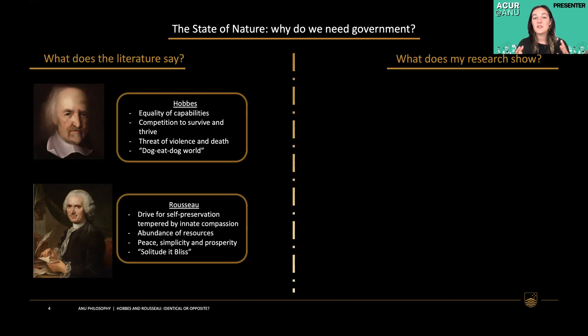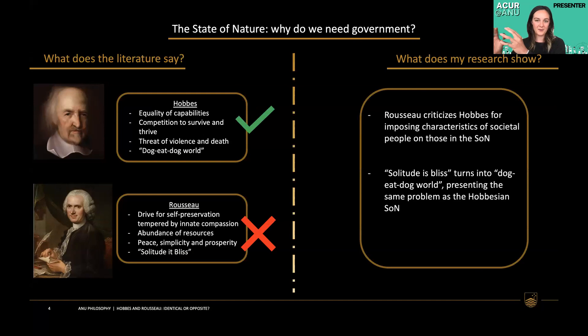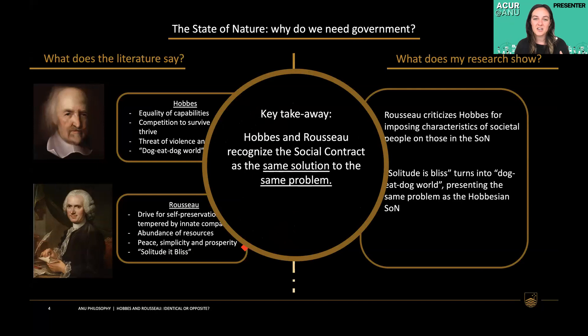The problem is that Rousseau ends up doing exactly what he criticises Hobbes for. Rousseau says the beginning state of nature is wonderful, but it slowly devolves when people start to claim property into a situation of great inequality where some are ruled over by others. However, just before the social contract comes into being, Rousseau also suggests the state of nature is a horrible and violent place. Therefore, he understands the same problem as Hobbes and views the social contract as the same solution.